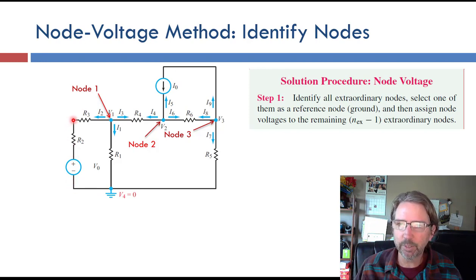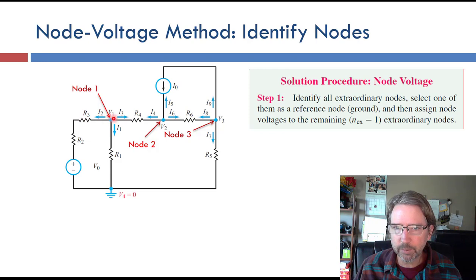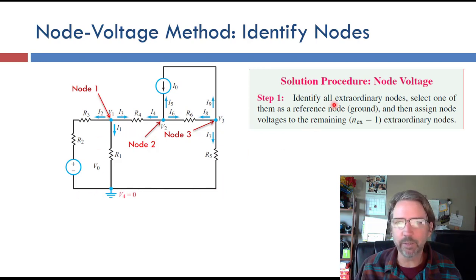There's a node here on the corner — that's an ordinary node, meaning there are just two resistors in series. The book's approach is to skip this voltage and combine R2 and R3 into an equivalent resistance. So here's our first extraordinary node with an unknown voltage — that's node 1. Node 2 has a current source coming into it. Node 3 has the current source coming out of it. So we have three extraordinary nodes with unknown voltages and will need to write three equations.